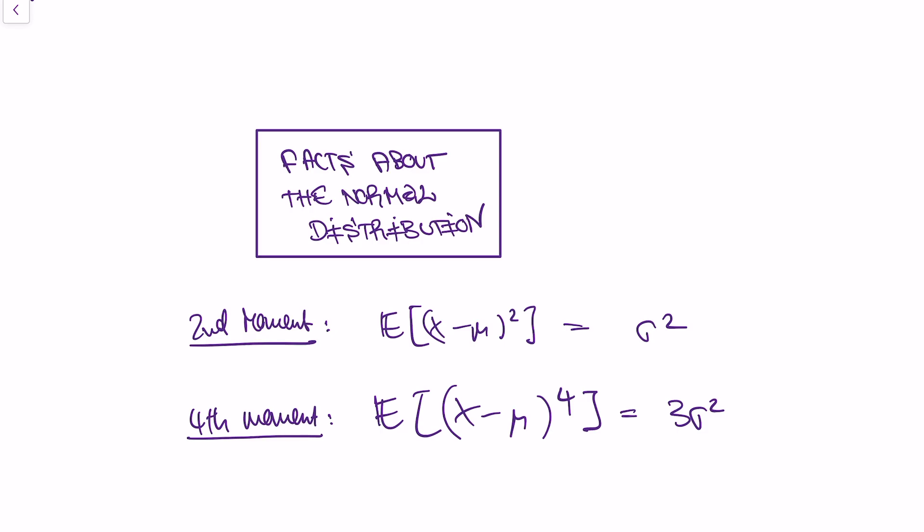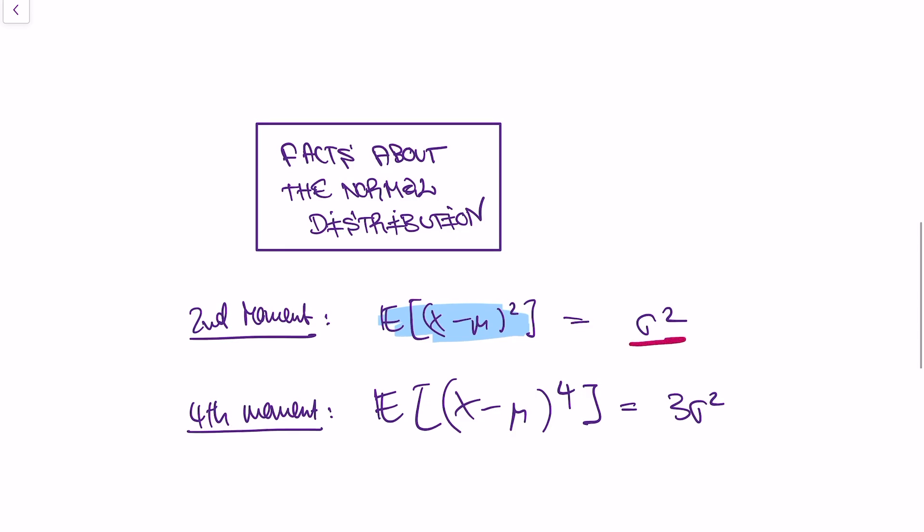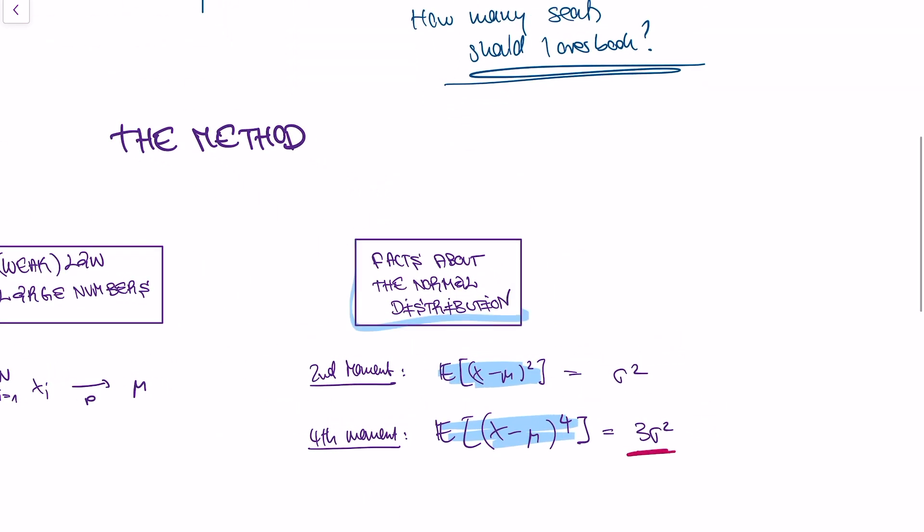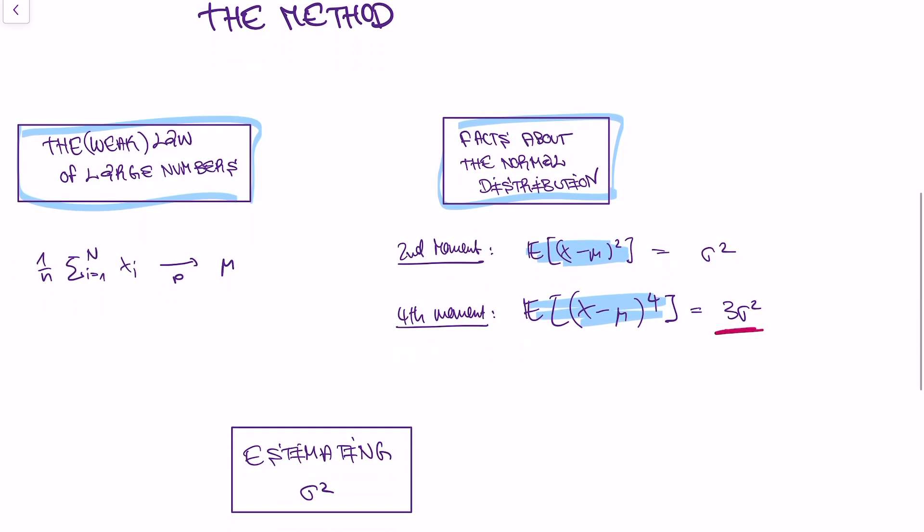And the second thing we know is we need to know facts about the normal distribution. So distributions have different moments. And the second moment, which we usually call variance, is defined like this. It's the expectation of x minus mu to the power of 2. And in the case of the normal distribution, this is equal to the variance of the distribution. And the fourth moment, which is defined as the expected value x minus mu to the power of 4, is in the case of the normal distribution equal to 3 times the variance. And we will use those two facts, the weak law of large numbers and those two moment equations of the normal distribution to get our estimator for the variance.